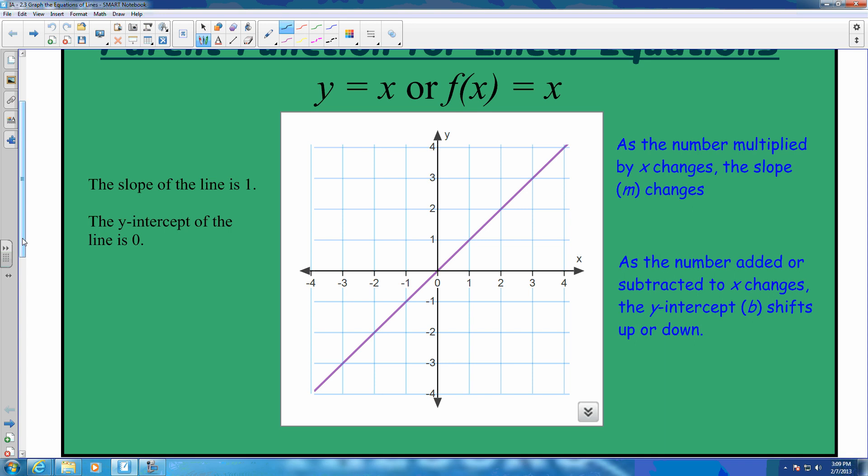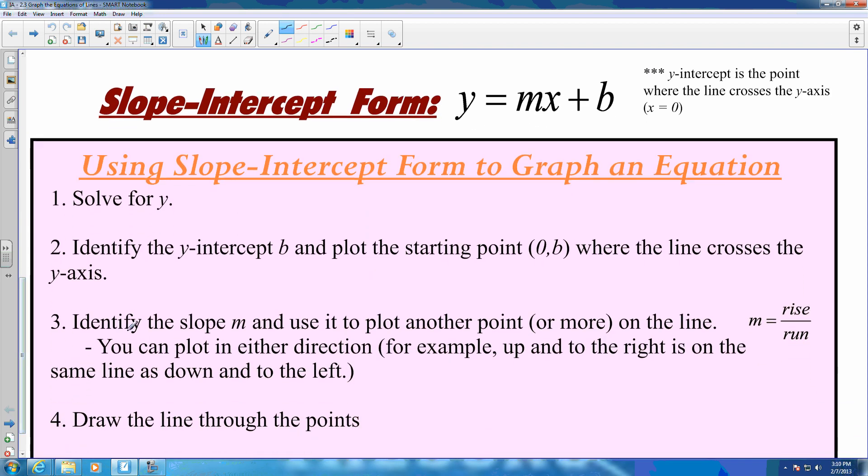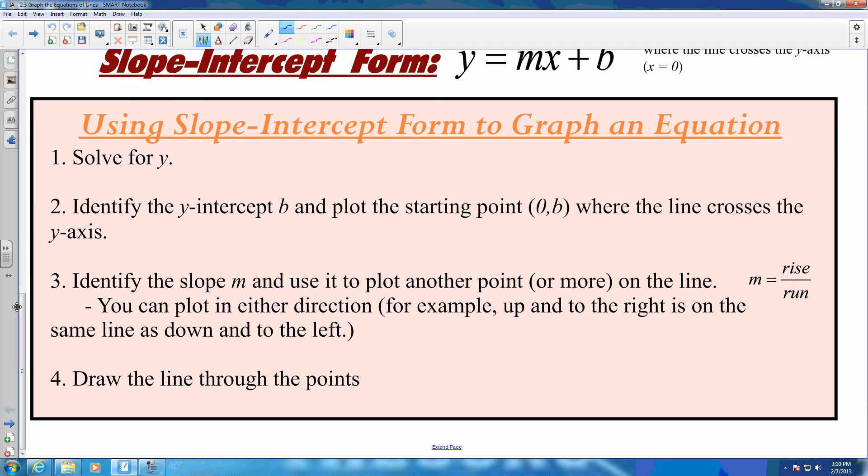We're going to be able to make graphs through different forms of equations, one of which is slope-intercept form. Slope-intercept form is putting it into the equation of y equals mx plus b. m is defined by its slope, and b is defined by its y-intercept.